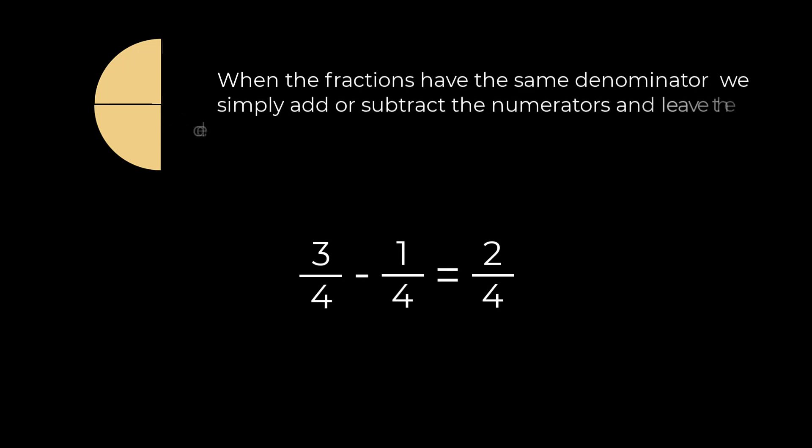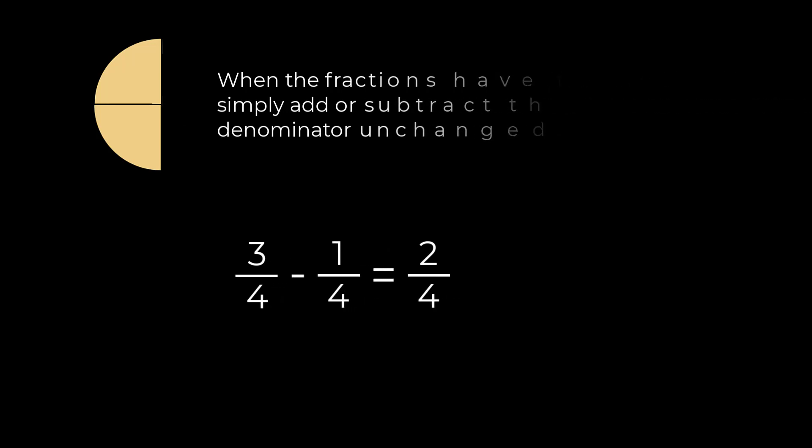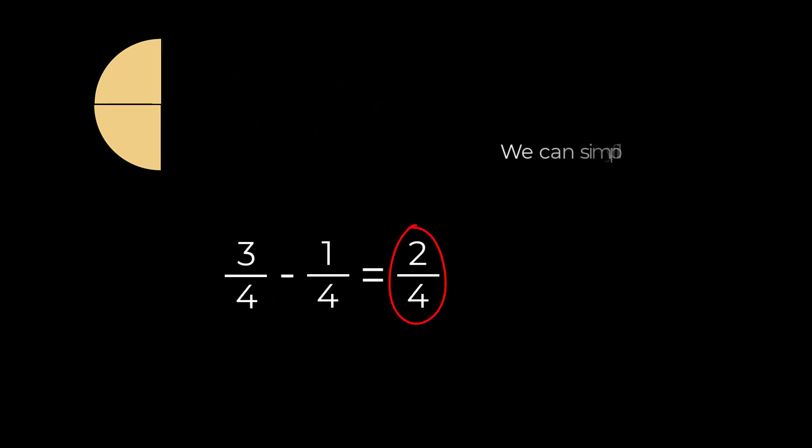Notice that the fraction two quarters can be simplified since both the numerator and denominator have a common factor of two. Two quarters of a pizza is equivalent to one half of a pizza.